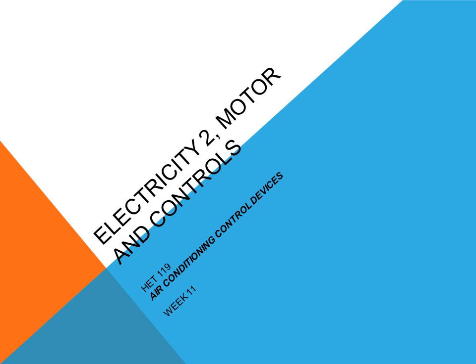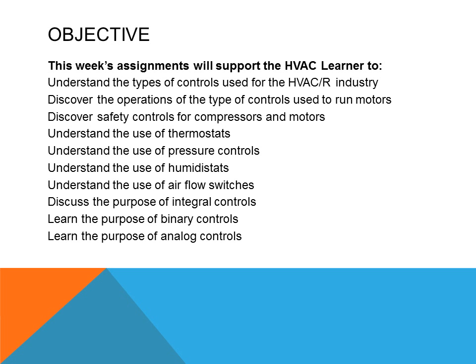This is HET 119, Electricity 2, Motor and Controls. This is week 11 and we're covering air conditioning control devices.